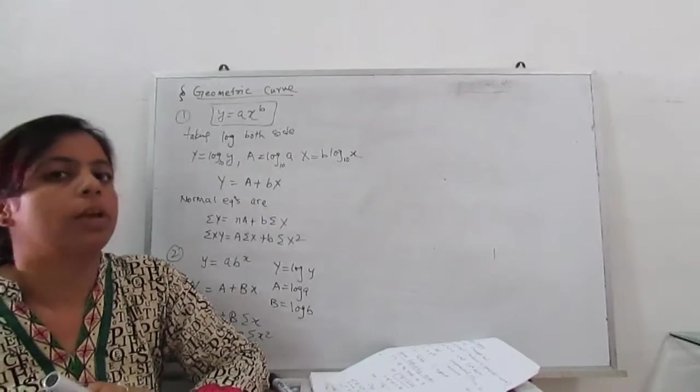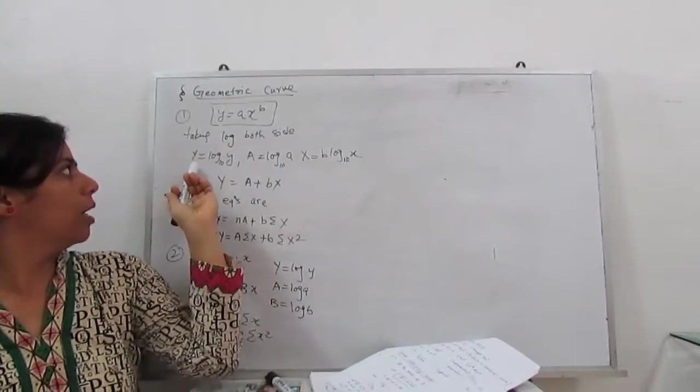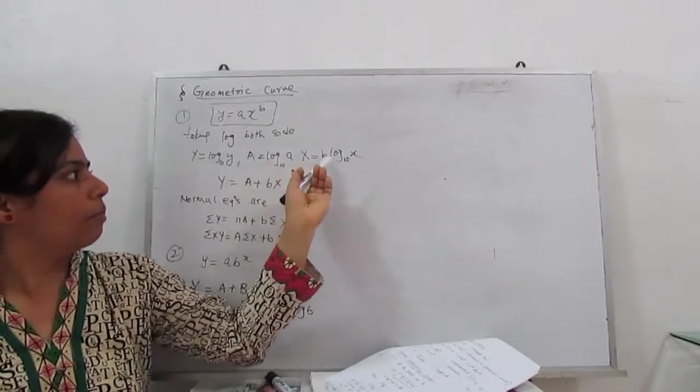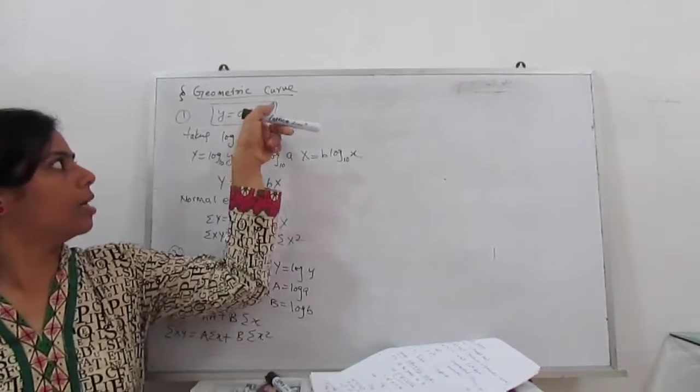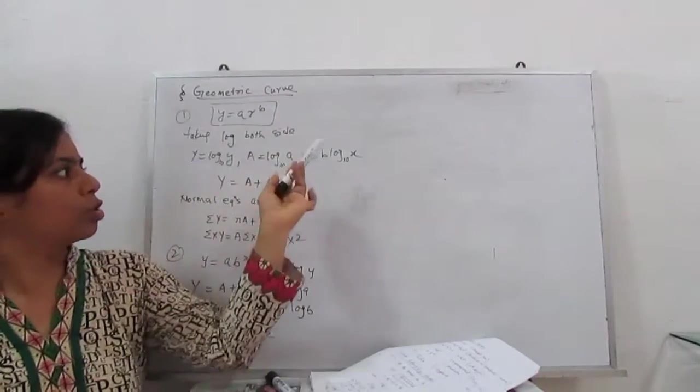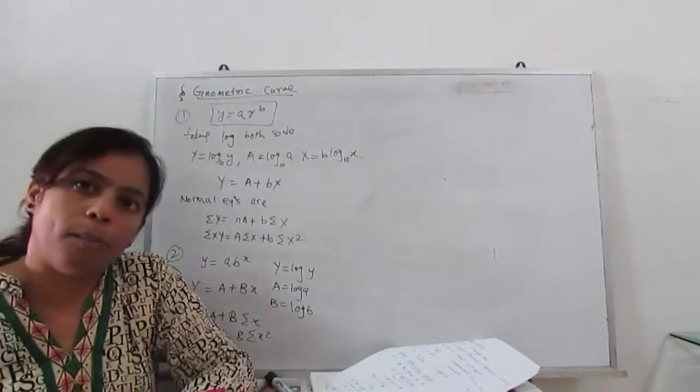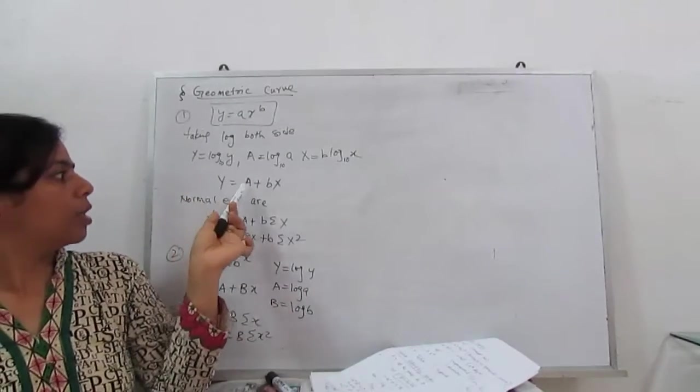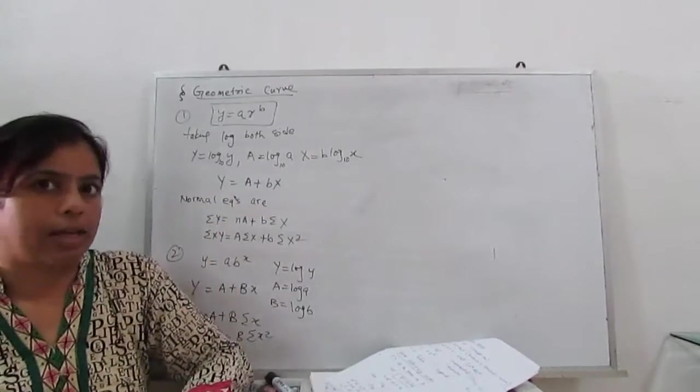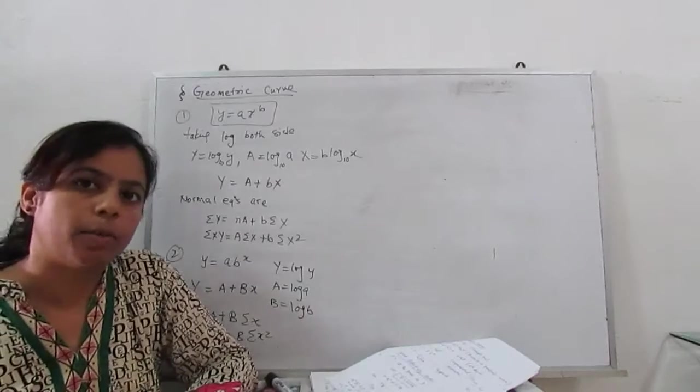For this also, we have to take log both sides. Y equals log base 10 capital A plus b log x. Here, we can take b as a constant. So b log x. So new curve, again in the form of straight line, Y equals A plus bX. Next process is the same.